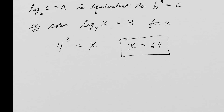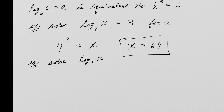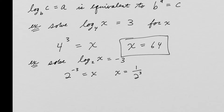Let's solve log base 2 of x equals negative 3. Writing in exponential form: 2 to the negative 3 equals x. Now 2 to the negative 3 is 1 over 2 to the 3rd — bringing it to the denominator changes the sign of the exponent. So it's 1 over 8, meaning x equals one-eighth.